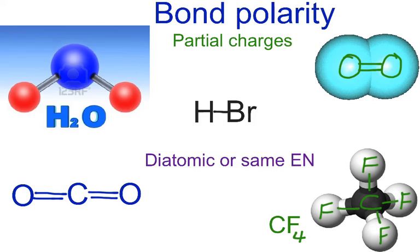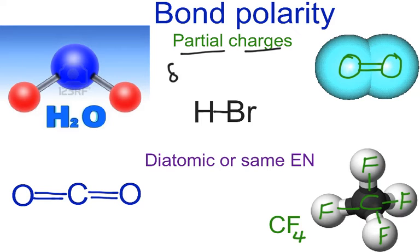In terms of bond polarity, when we have uneven sharing and an electronegativity difference, we will create partial charges. The partial charges are represented by a Greek symbol, delta, and it can either be positive or negative.